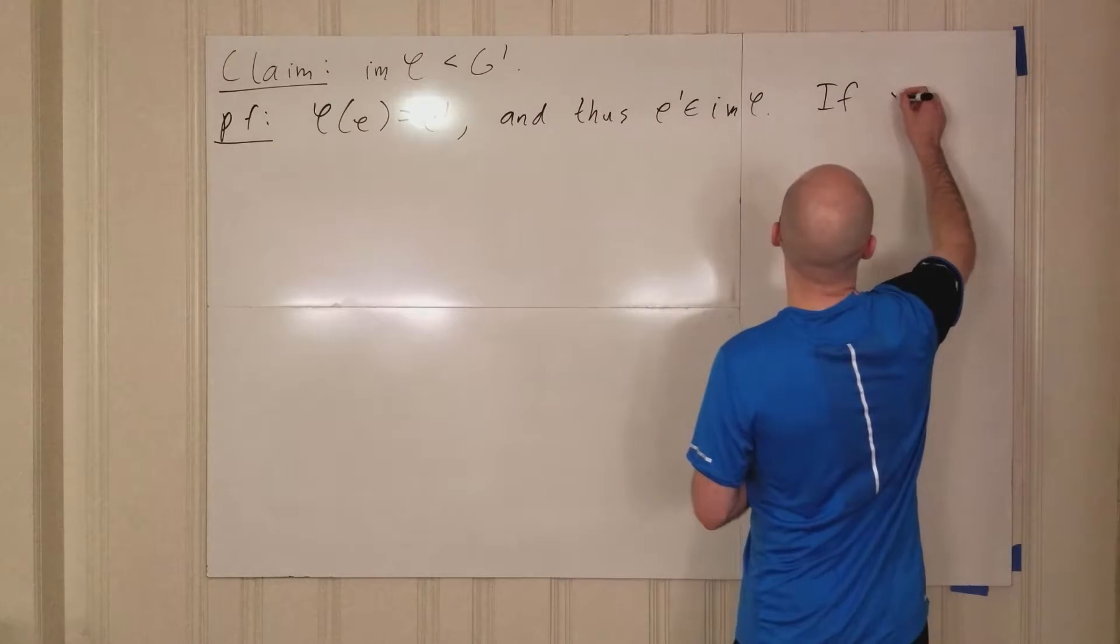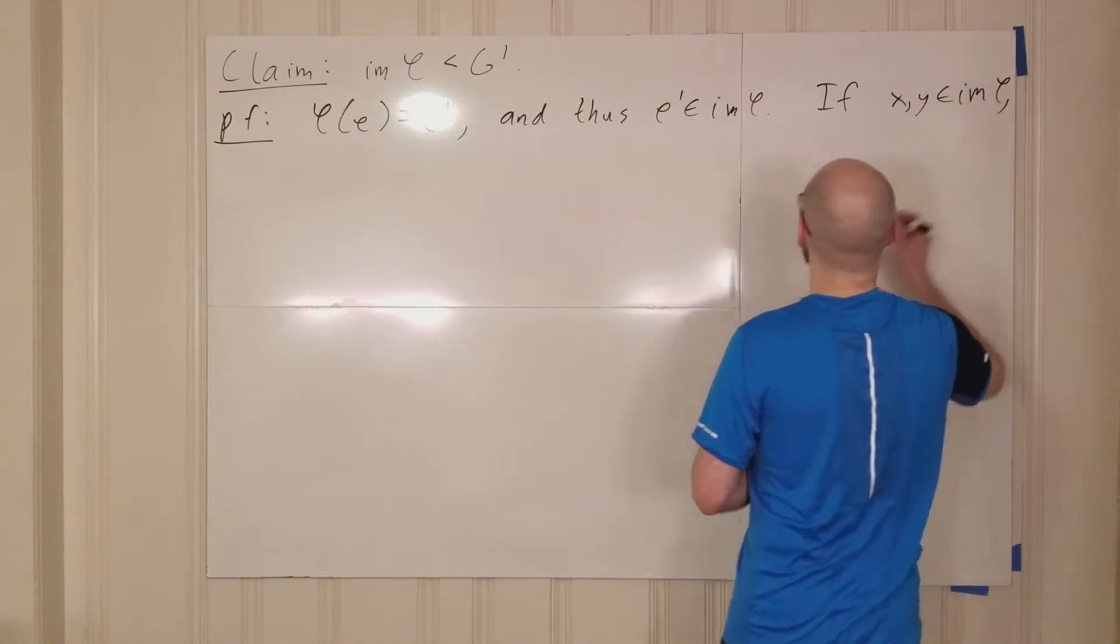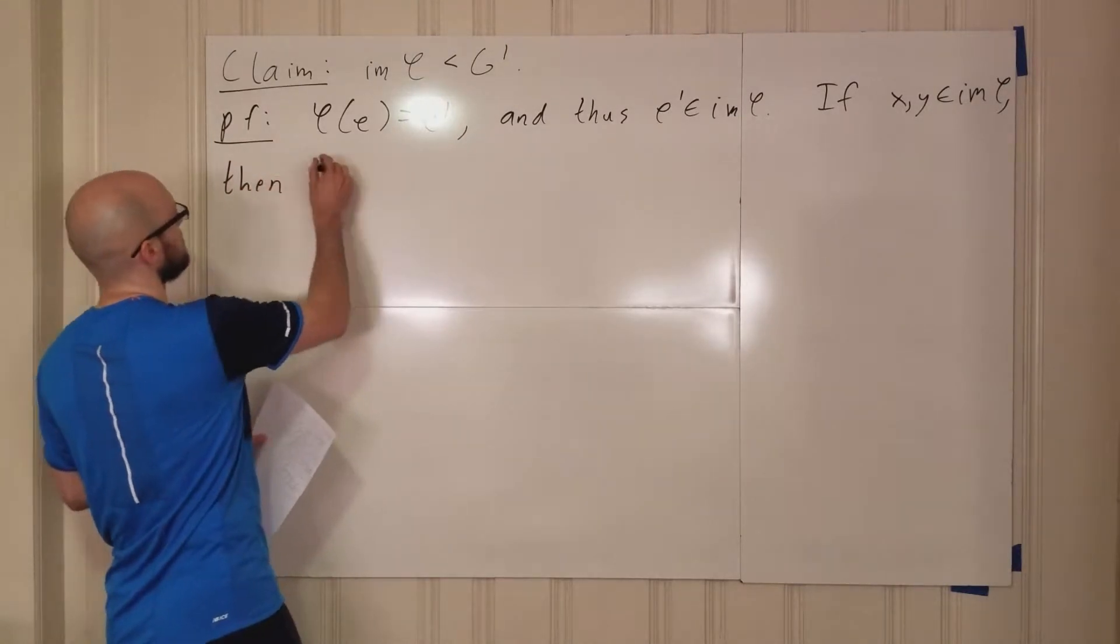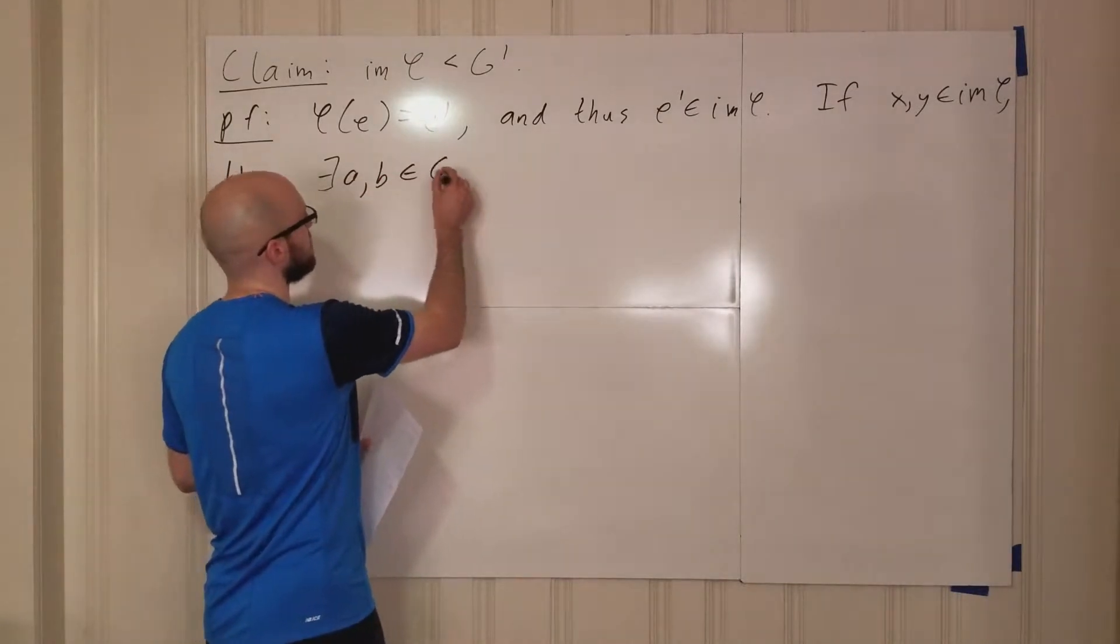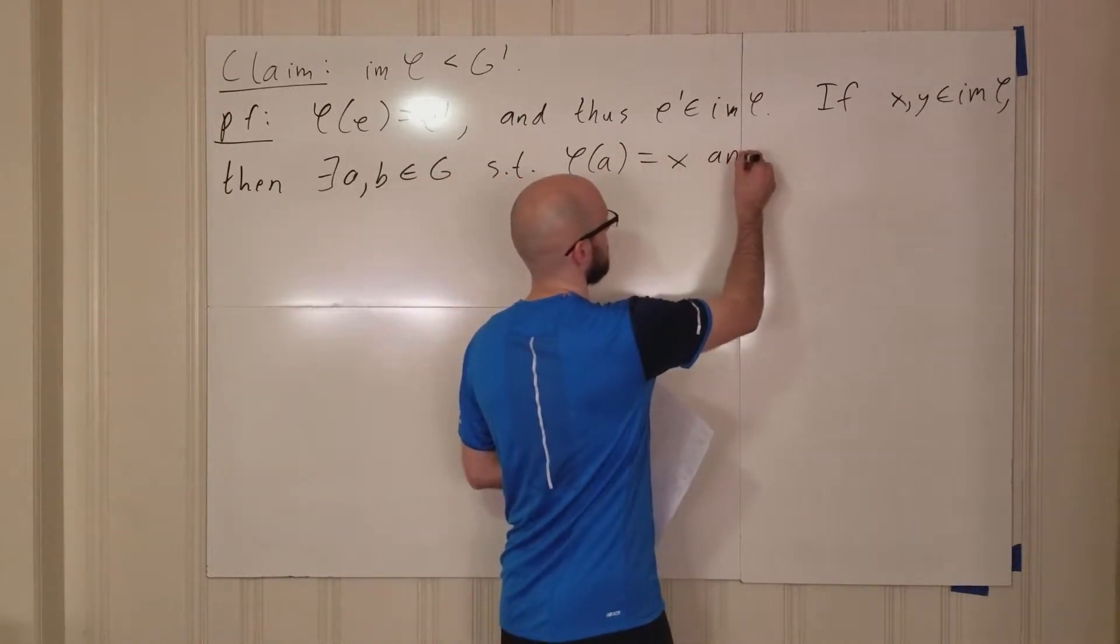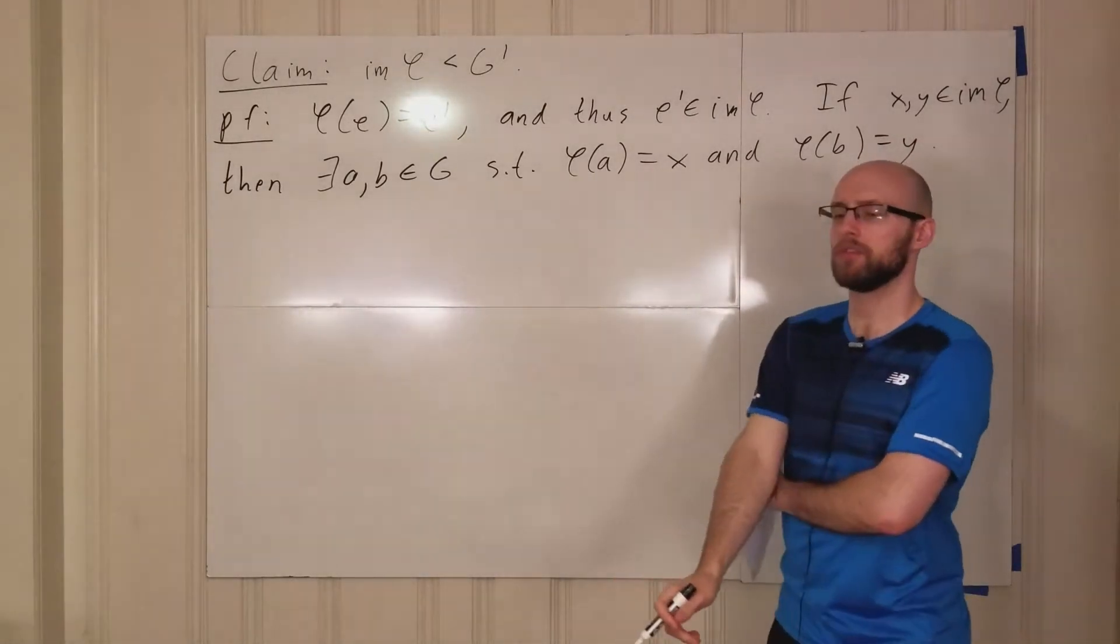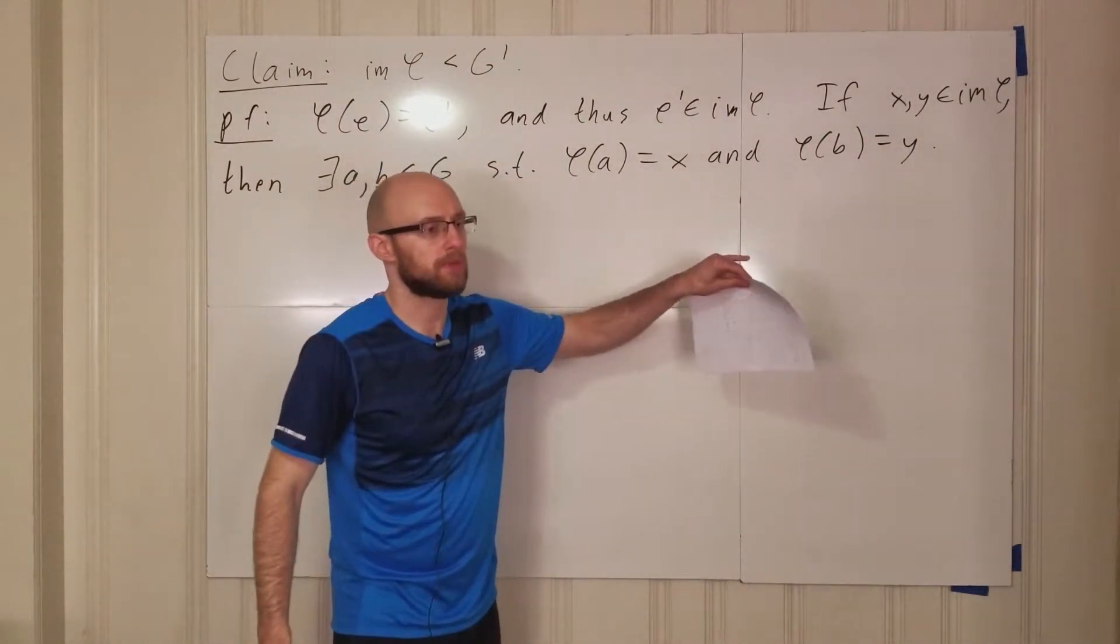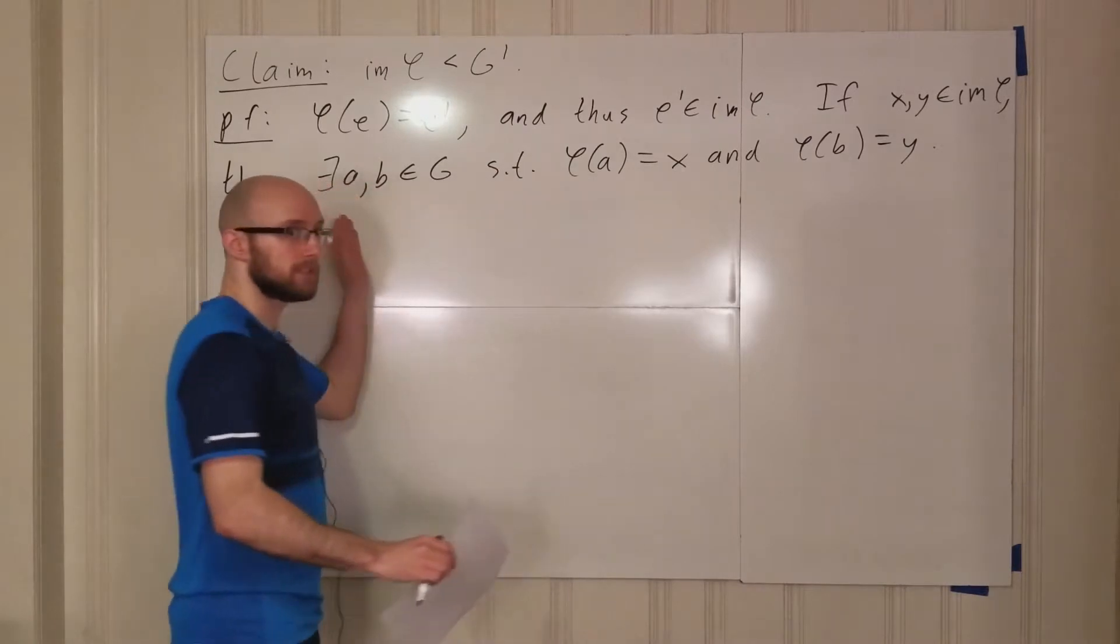So if we have X and Y in the image of phi, what does that mean? What that means is that there exists elements, let's call them A and B that are in G, such that phi will map A to X and phi will map B to Y. So we have two elements in the image of phi. We want to prove that the product X times Y is in the image of phi. Well, we've introduced this A and this B here. Let's try multiplying them together.